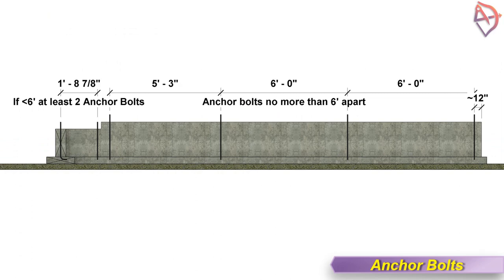Anchor bolts must be placed no further apart than 6 feet or 183 centimeters, and there must be a bolt within 12 inches or about 30 centimeters at both ends of a sill plate. If the sill plate is less than 6 feet or 183 centimeters, there must be at least 2 anchor bolts.